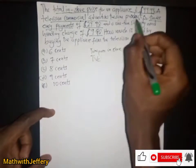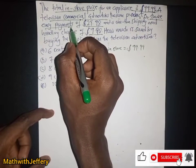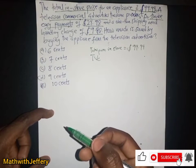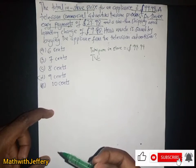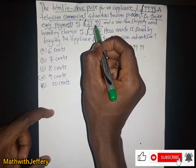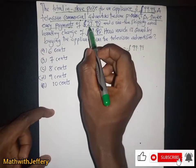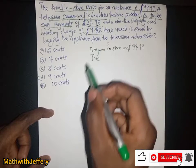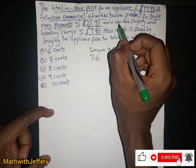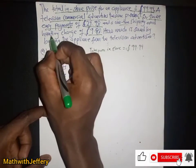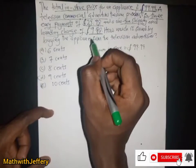The TV commercial is advertising it for three easy payments. That means they pay $29.98 the first time, another $29.98 the second time, and another $29.98 the third time — but the third also includes the one-time shipping and handling charge.